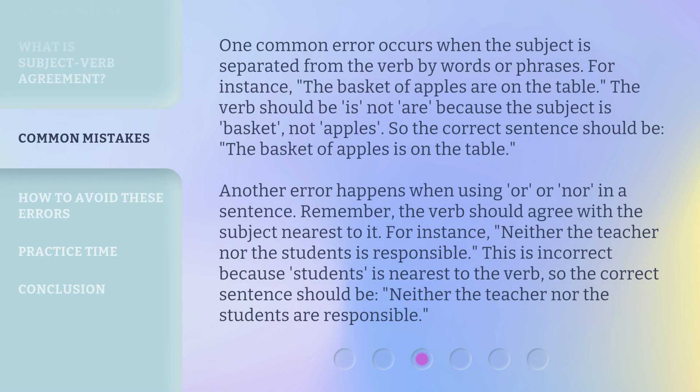One common error occurs when the subject is separated from the verb by words or phrases. For instance, 'The basket of apples are on the table.' The verb should be 'is,' not 'are,' because the subject is 'basket,' not 'apples.' So the correct sentence should be: 'The basket of apples is on the table.'